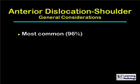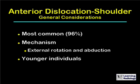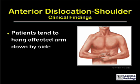Anterior dislocations of the shoulder are the most common type — 96% of all dislocations are anterior dislocations. The mechanism is a force directed against the shoulder in external rotation and abduction. They tend to occur in younger individuals, and there is a relatively high recurrence rate.